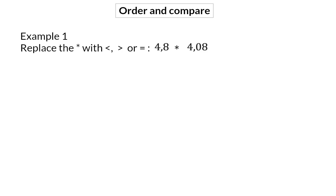When you need to order or compare decimal fractions, it is useful to make sure that all of them have the same number of decimal places. In our first example, we have 4,8 which has one decimal, and we need to compare that with 4,08 having two decimals. Remember that adding a zero at the end of a decimal has no influence on the size of the number. So we can start off by writing 4,8 with an extra zero. Now we can compare this to our 4,08.